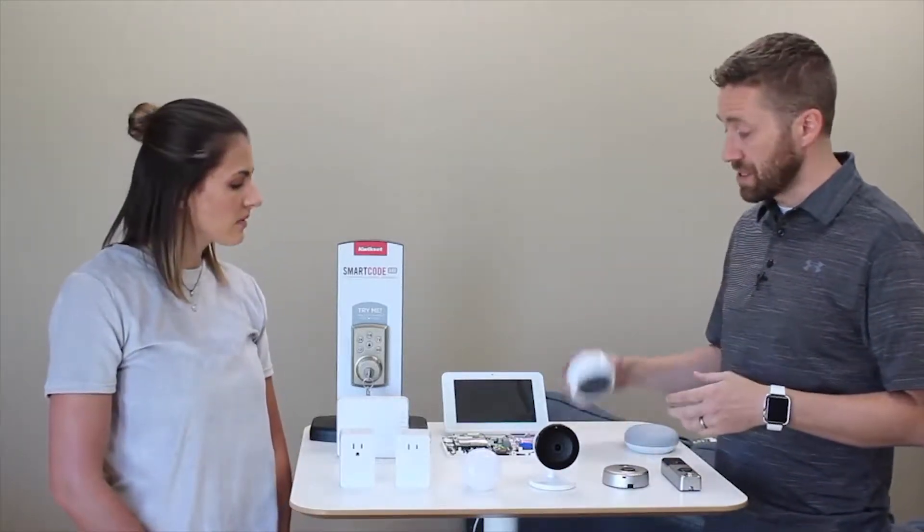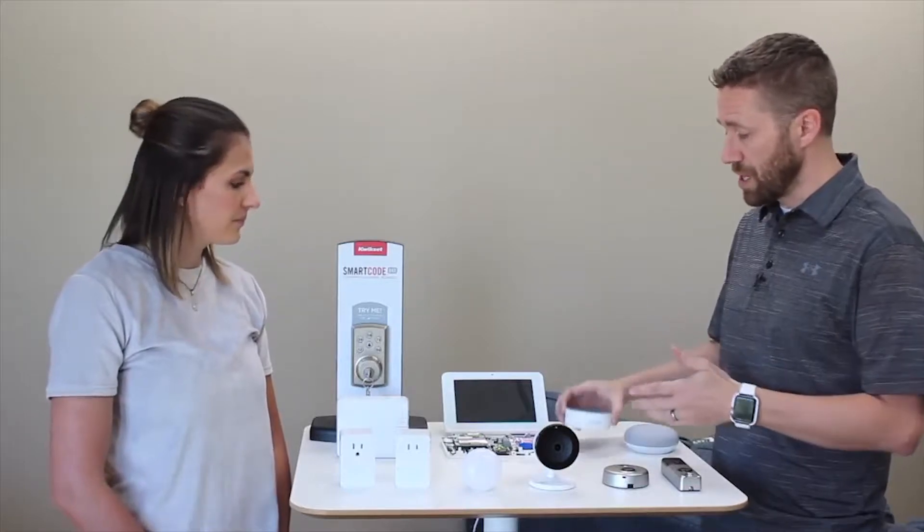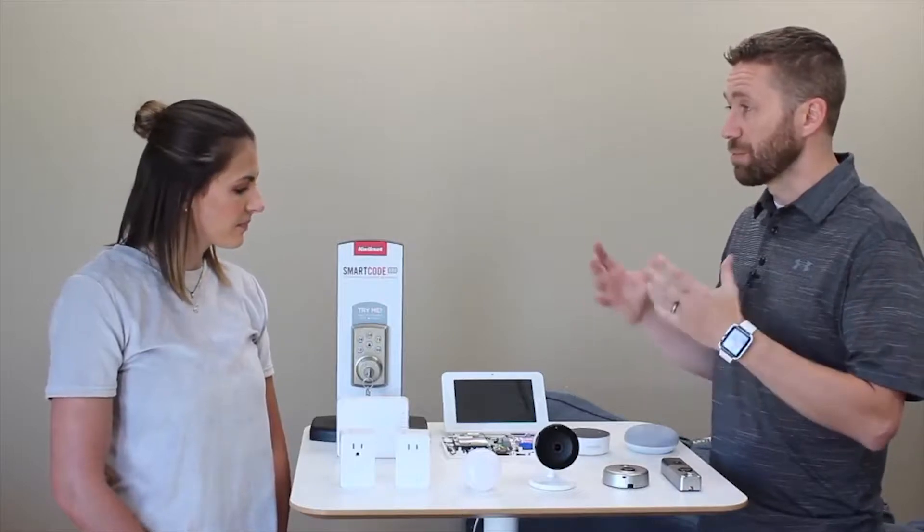Amazon Echo comes in a variety of styles. This is the Echo Dot, nice and small and discreet. You can put these everywhere. They're also fairly affordable. There's also taller ones that have Bluetooth speakers built into them. There's a lot of options.